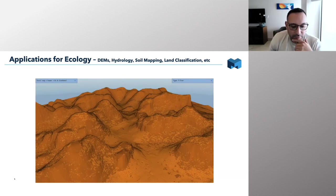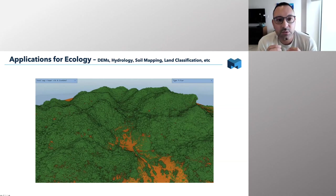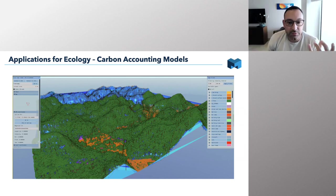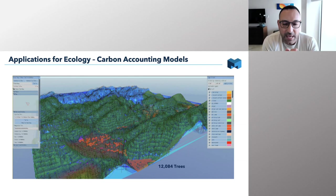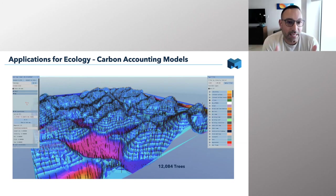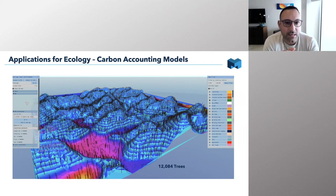We can also go a little bit further — using deep learning, we actually have the ability to count individual trees, not just recognize the canopy. In this sample of data, there are just over 12,000 trees. This is a great technology that could be used from the point of view of carbon accounting or even forest health. We hope to develop it so that, depending on the quality of the data, we'll be able to recognize individual species and see some of these important changes.